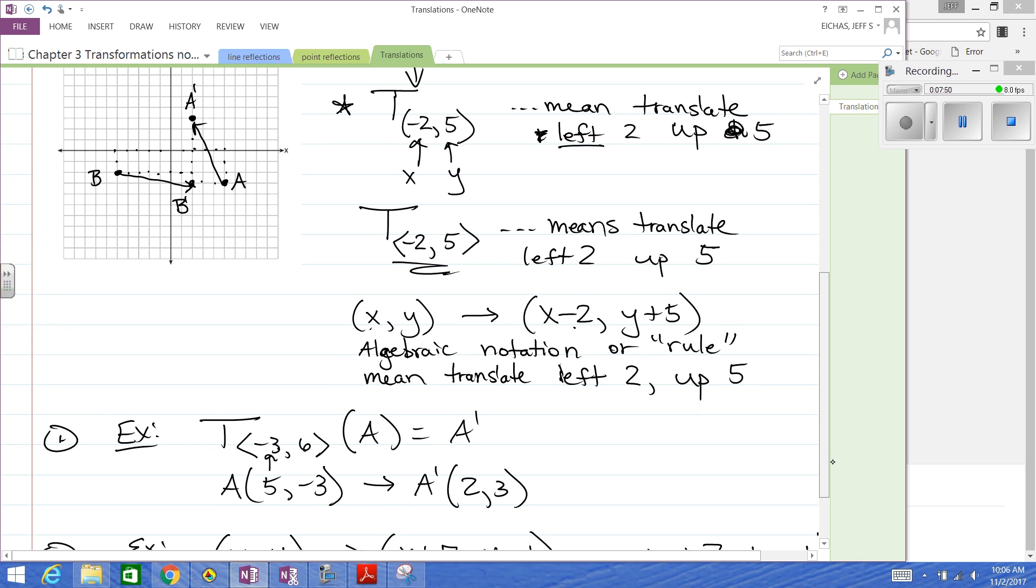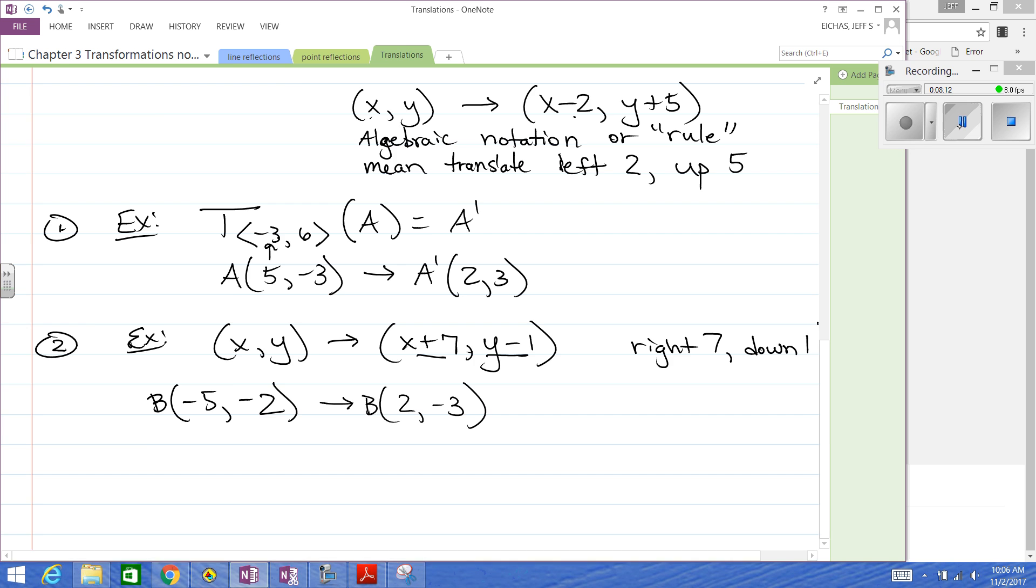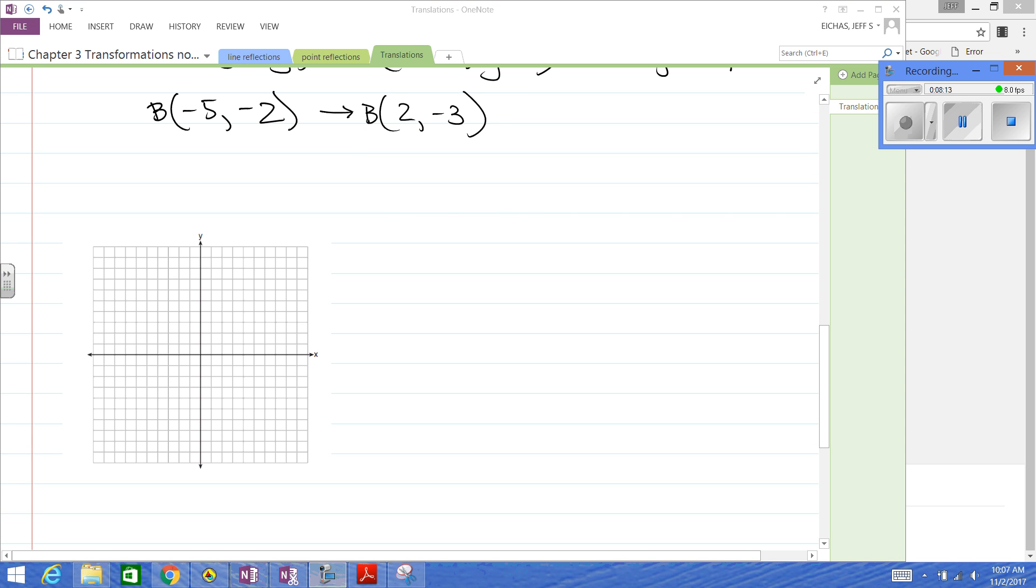So that's obviously a different translation to move from B to B prime. B prime looks like it's at 2, negative 3. And you can see that's what would have happened. If we add 7 to negative 5, you get 2. If you subtract 1 from negative 2, you get negative 3. So you can do these algebraically pretty easily. You can just count. Translations should be very reasonable. So to go to another example here, let's make up example number 3 here for this.